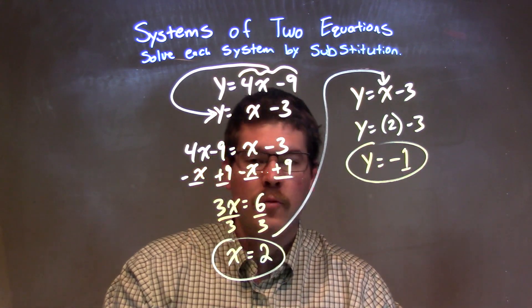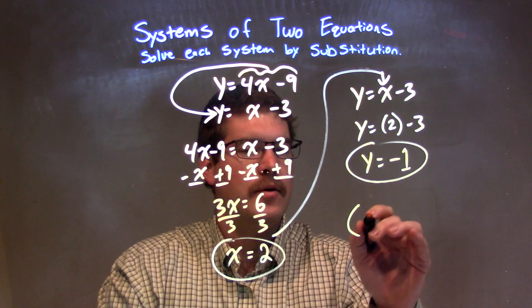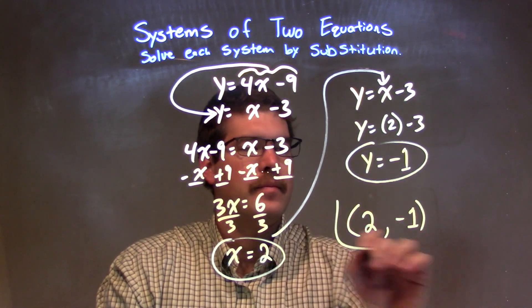And so, our final answer, we can write as a coordinate point—we have our x and y value—we can write that as a coordinate point here: 2 comma negative 1. That's it.